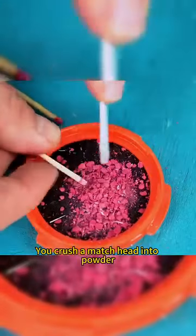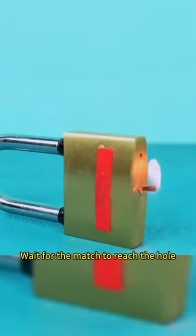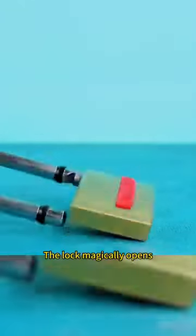You crush a match head into powder. Pour it into a lock that won't open. Stick a match in it. Light it. Wait for the match to reach the hole. The lock magically opens.